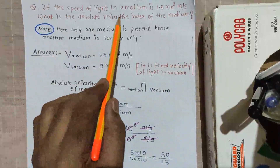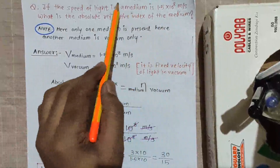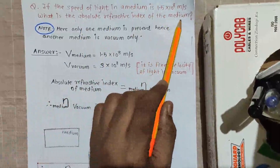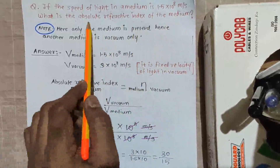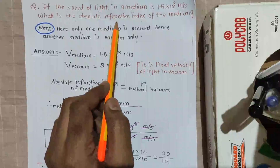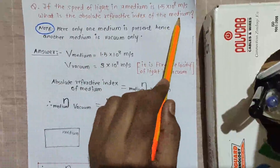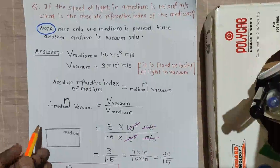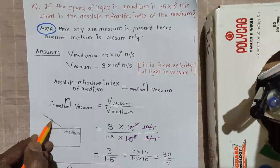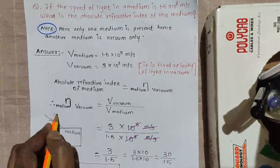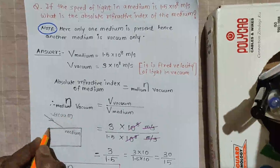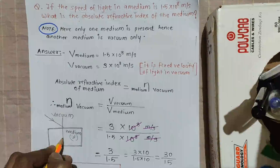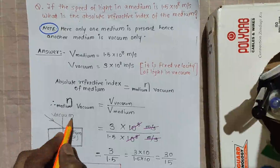The question asks: what is the absolute refractive index of the medium? If we consider the medium to be water, we need to calculate the absolute refractive index of water. The statement itself tells us the light is coming from vacuum and going inside the medium, which we have considered as water.